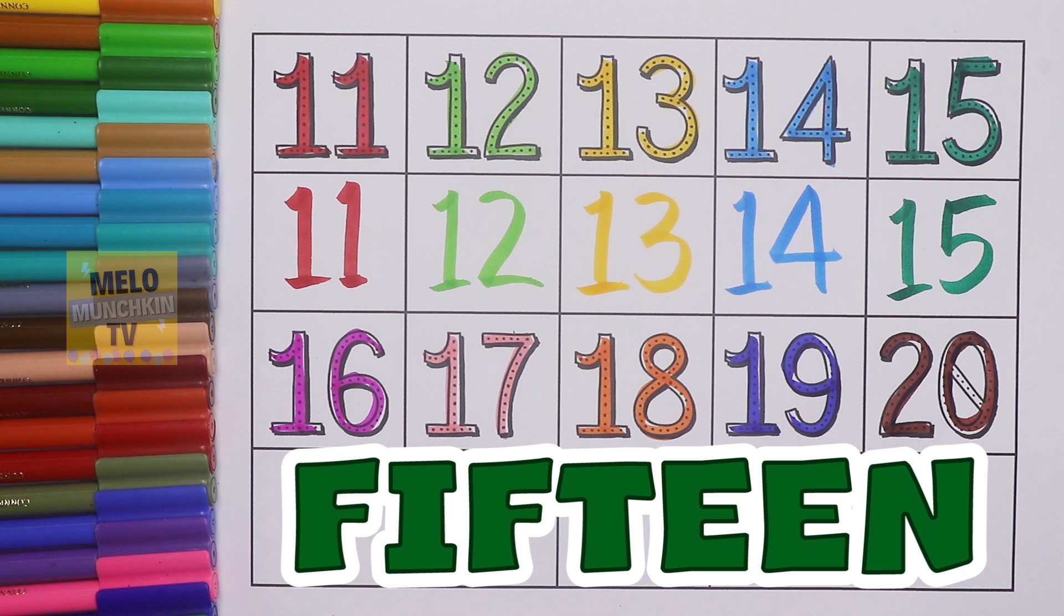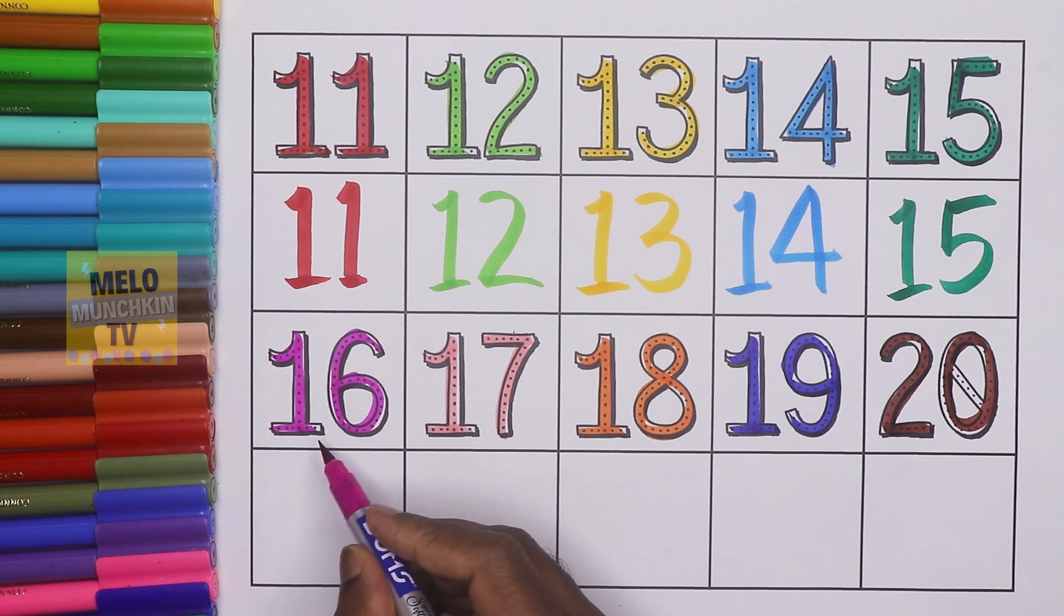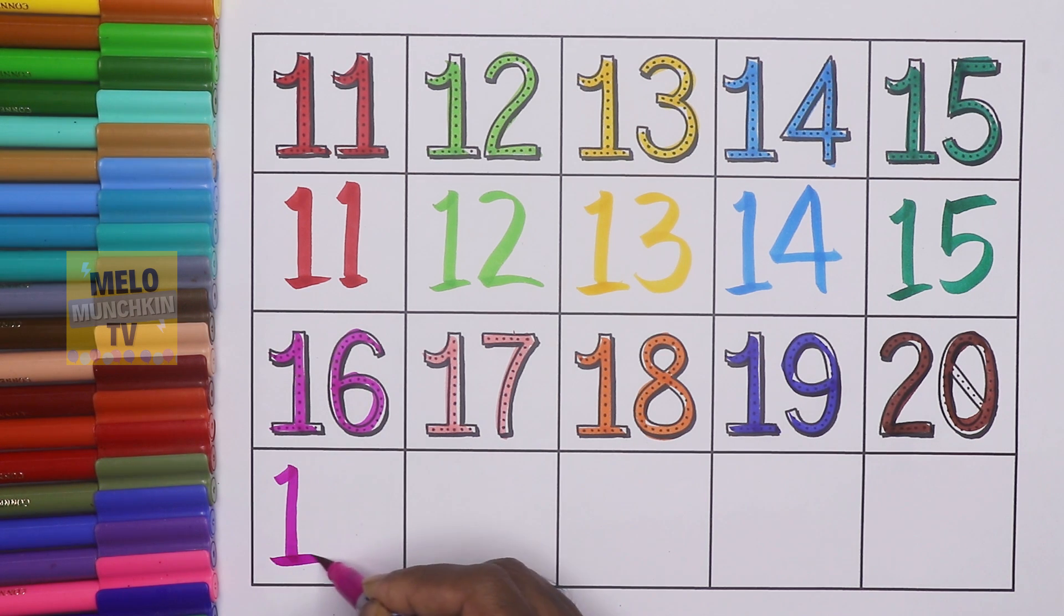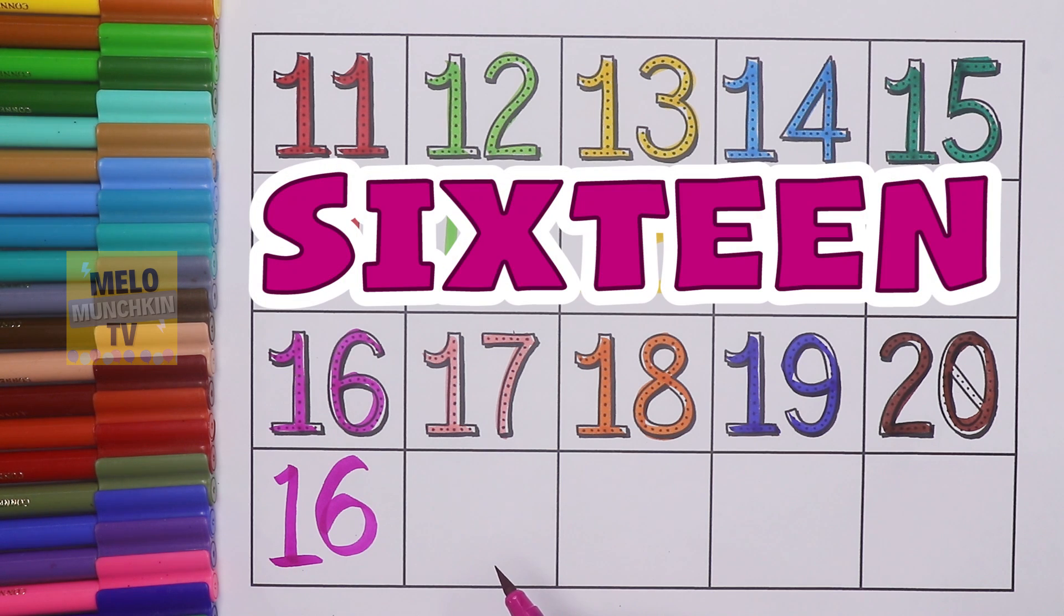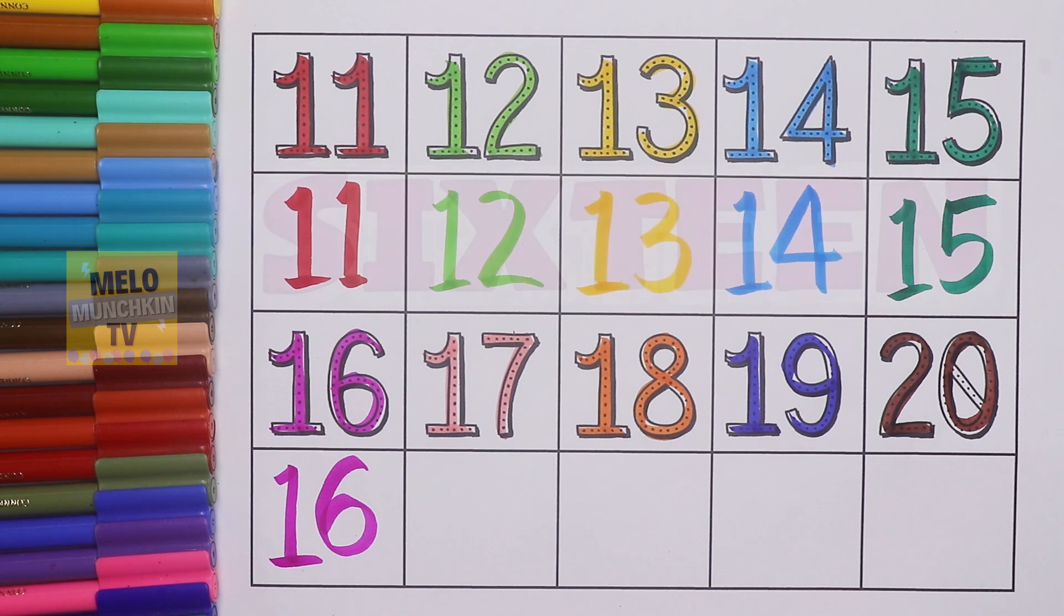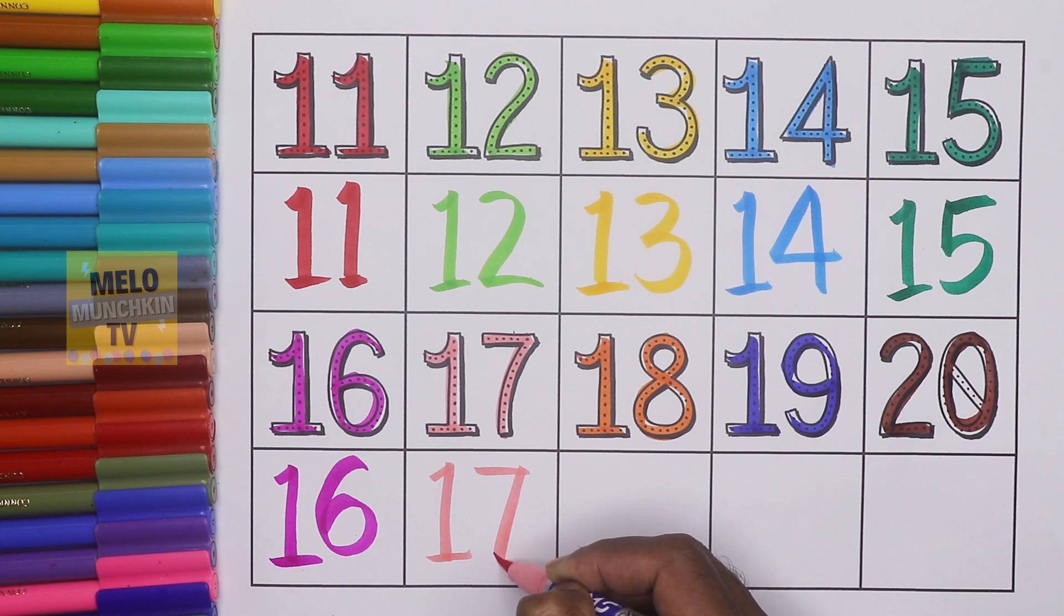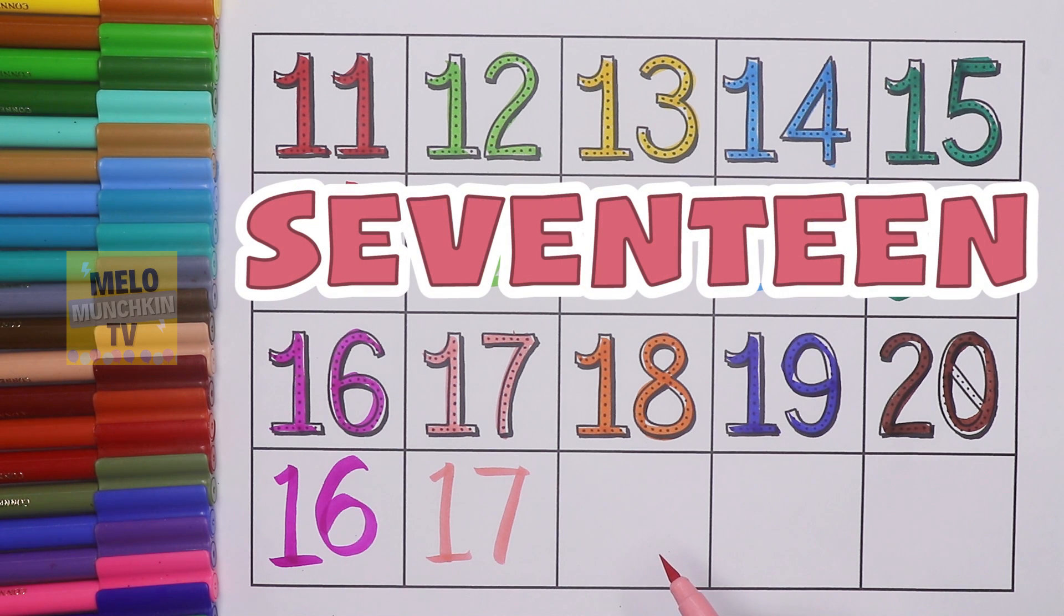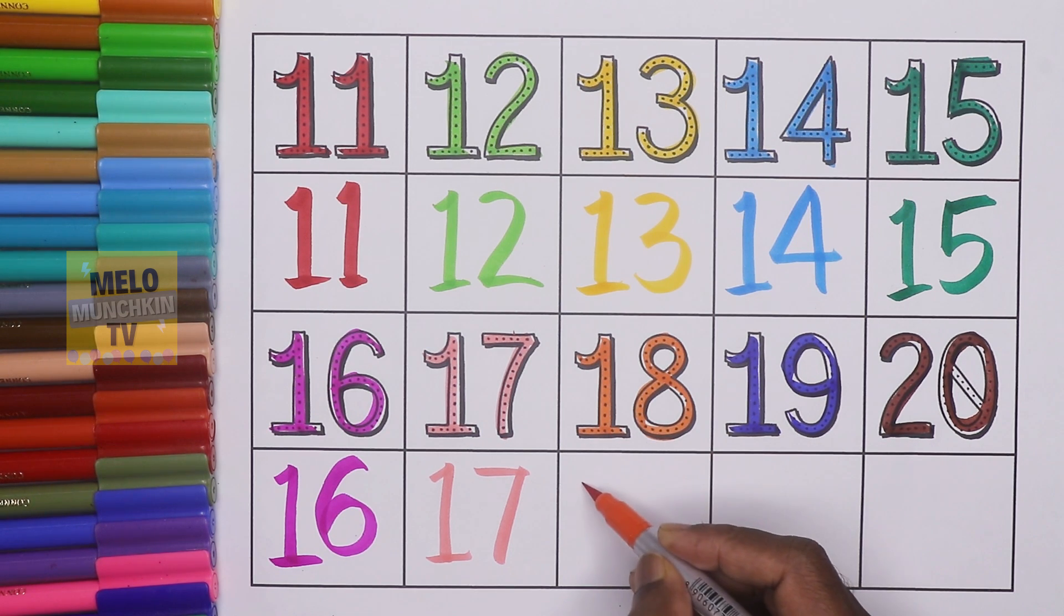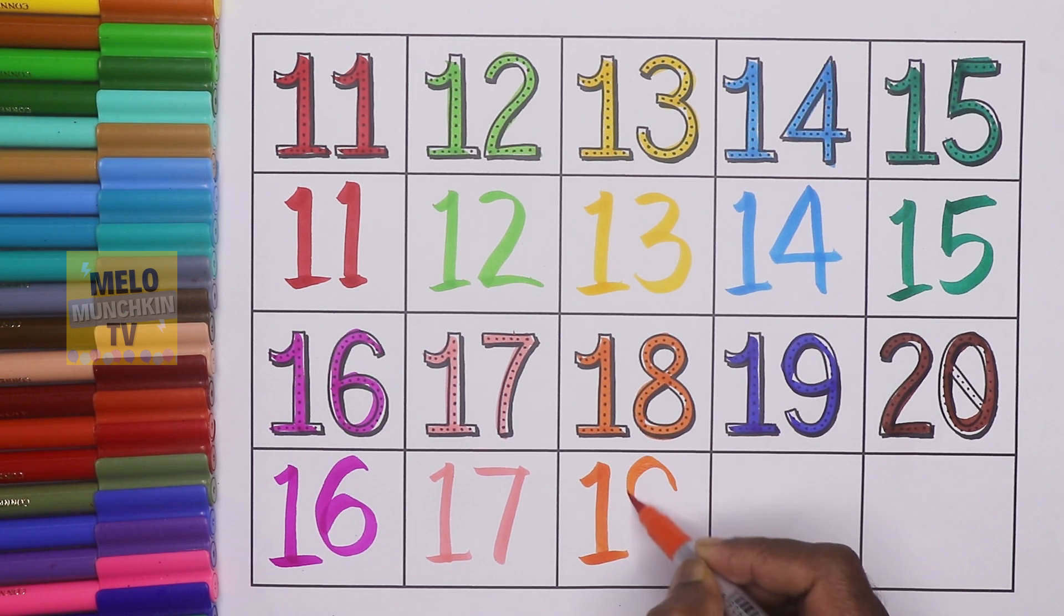This is 16, 1-6, 16, S-I-X-T-E-E-N, 16. Next, 17, 1-7, 17, S-E-V-E-N-T-E-E-N, 17.